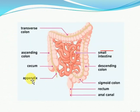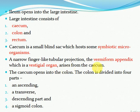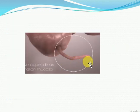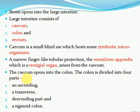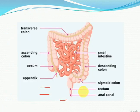From the cecum arises a narrow finger-like tubular projection called the vermiform appendix, which is a vestigial organ. A vestigial organ is one that was functional in our ancestors but has no functional role in our body now. The colon is further divided into ascending colon, transverse colon, descending colon, and sigmoid colon — so basically four parts of the colon.